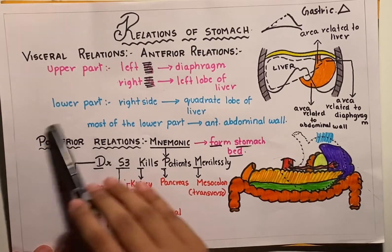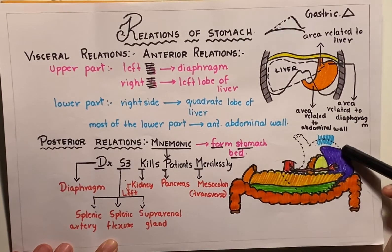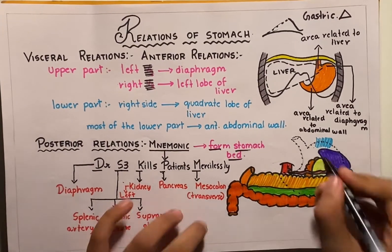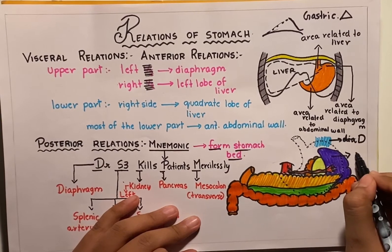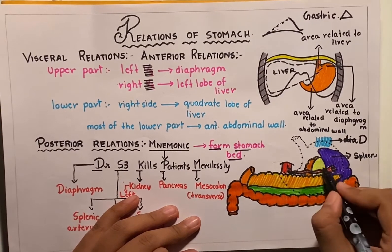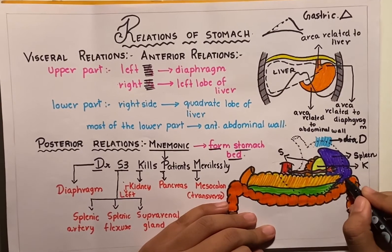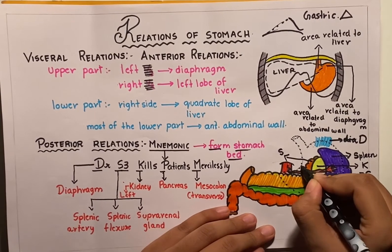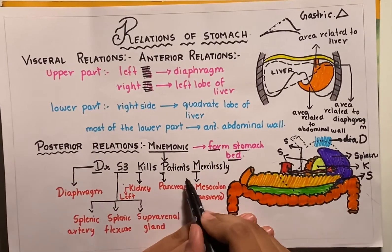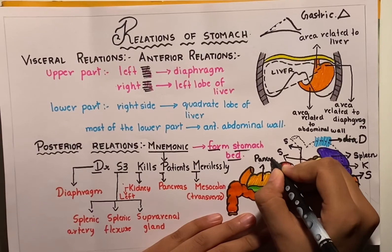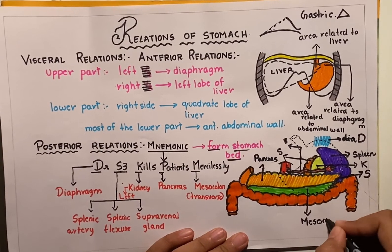Now, let us represent the posterior relations of the stomach with the help of a diagram. From above downwards, you find the diaphragm, marked as D. Then you have the spleen, the left kidney, the suprarenal gland, the splenic flexure as the second S, and the splenic artery as the third S. The P of patients stands for the pancreas, and M stands for the mesocolon — more specifically, the transverse mesocolon.